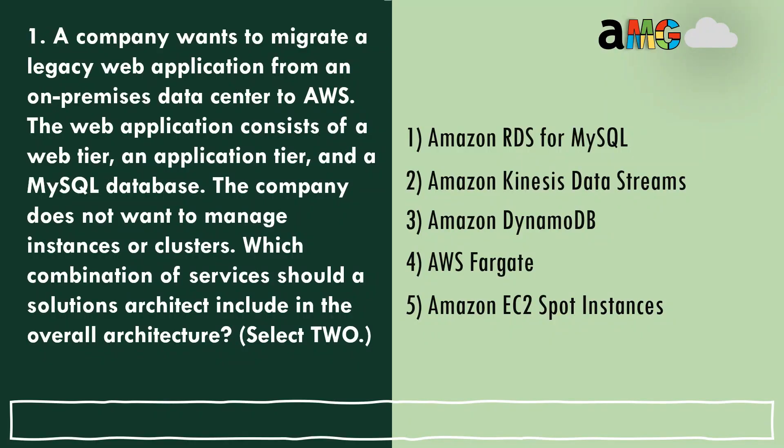Question 1: A company wants to migrate a legacy web application from an on-premises data center to AWS. The web application consists of a web tier, an application tier, and a MySQL database. The company does not want to manage instances or clusters. Which combination of services should a solutions architect include? Select two options — you have 10 seconds.